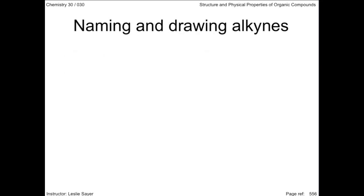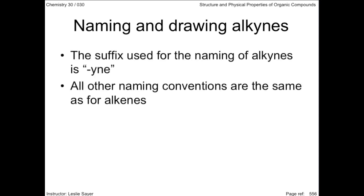The rules for naming alkynes are the same as for alkenes. Only this time the suffix for alkynes is "-yne". This is a line structural formula for hept-3-yne. Notice the linear shape that is always around the triple bond.